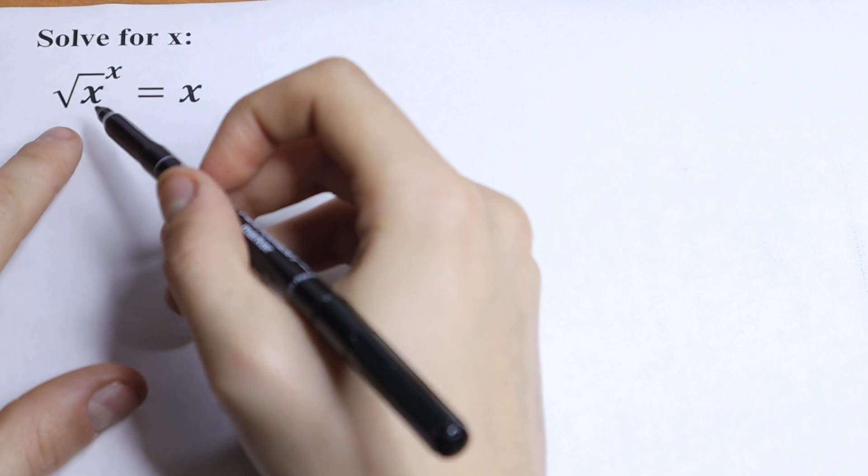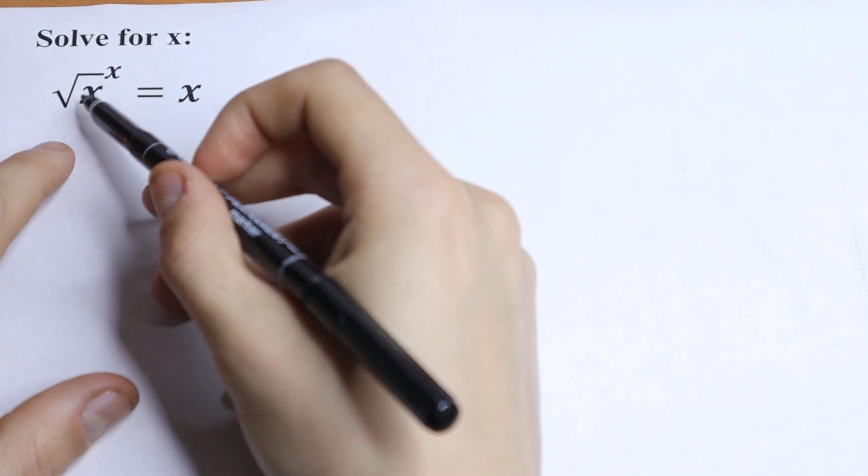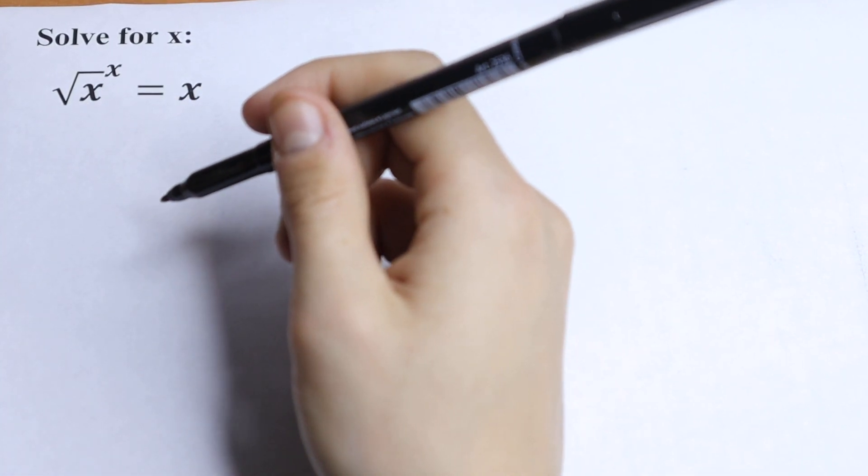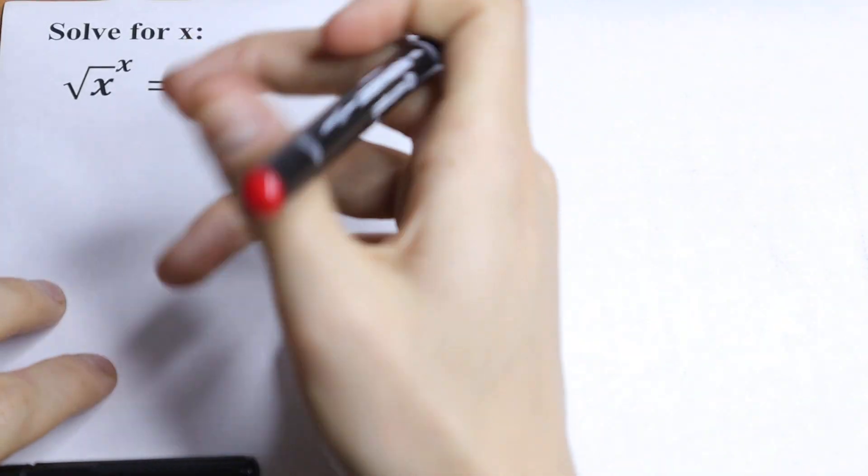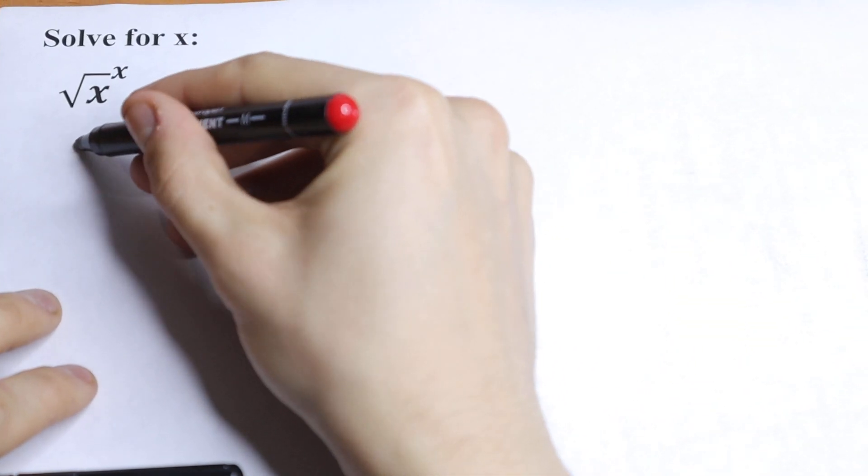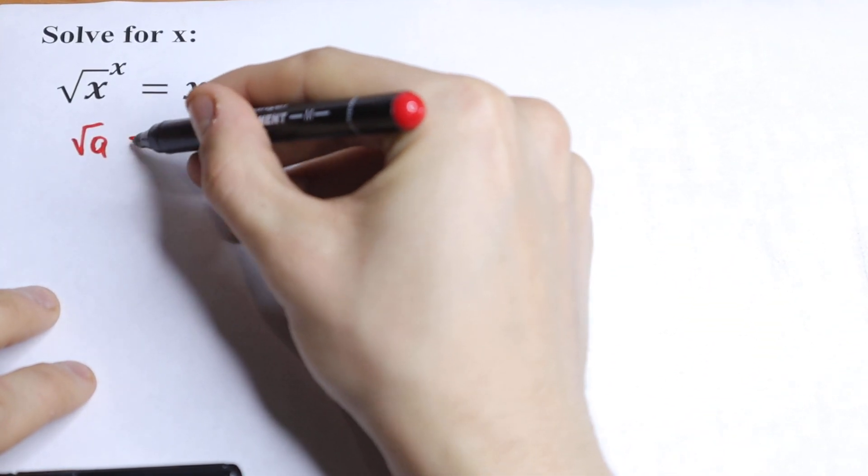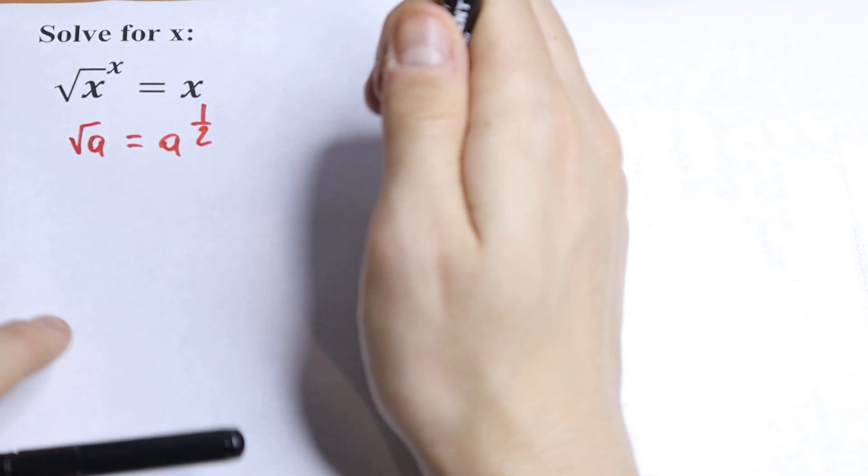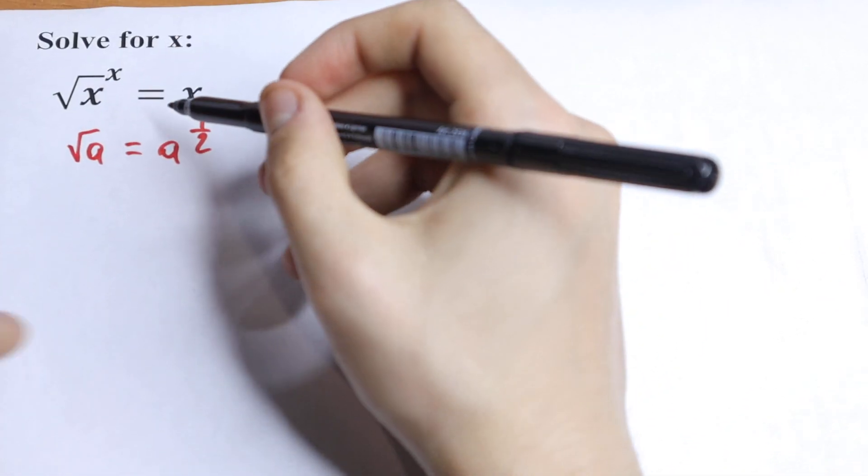How can you solve this? First of all, we can write this square root of x sign as x to the power 1/2, because we know if we have square root of a, for example, we can write it as a to the power 1/2. So let's write this square root of x in that way.